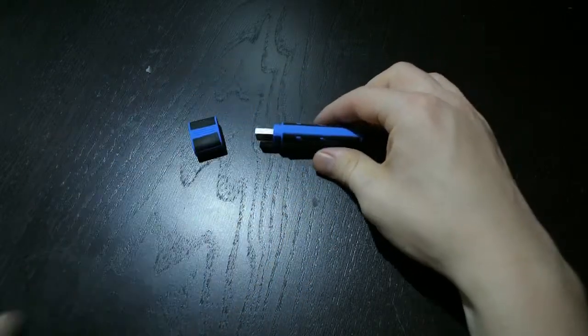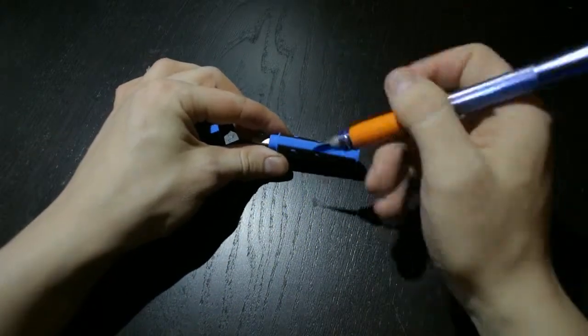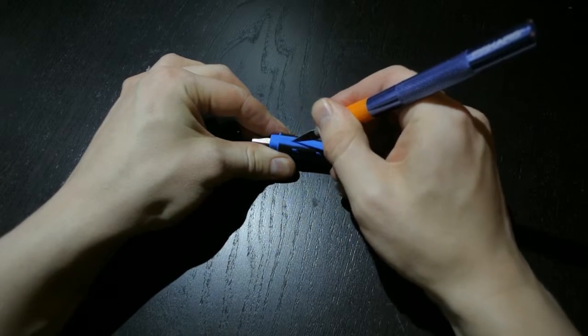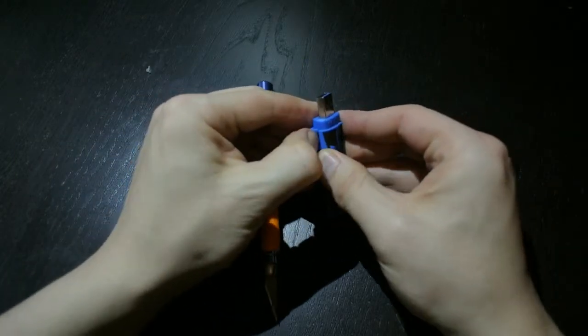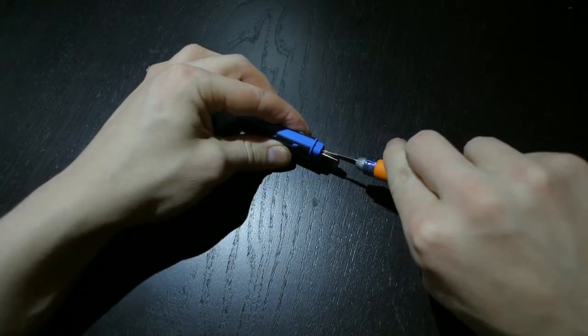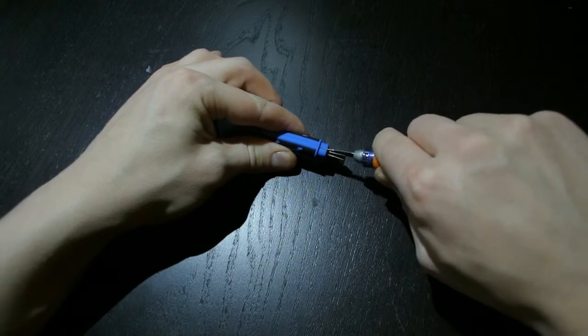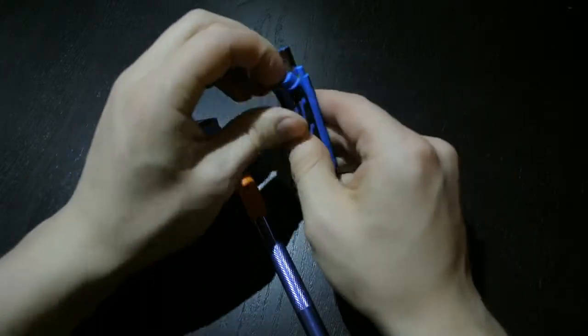So let's take it apart. Let's make some incisions and we should be able to take the side open from the USB stick. It's definitely glued inside with some kind of silicone rubber.